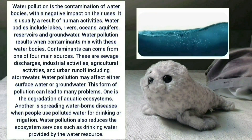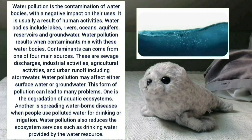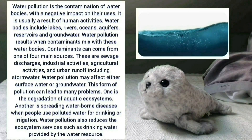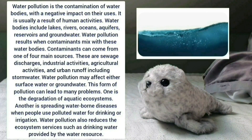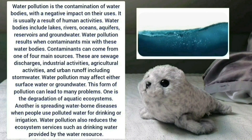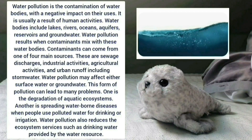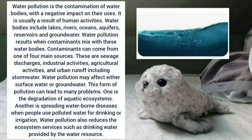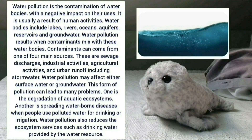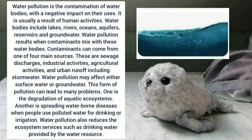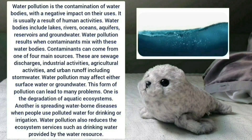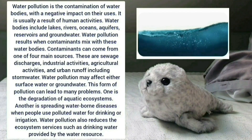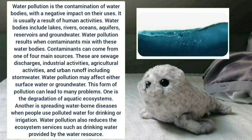Contaminants can come from one of four main sources: sewage discharges, industrial activities, agricultural activities, and urban runoff including stormwater. Water pollution may affect either surface water or groundwater. This form of pollution can lead to many problems, including the degradation of aquatic ecosystems, spreading waterborne diseases when people use polluted water for drinking or irrigation, and reduces ecosystem services such as drinking water provided by the water resource.